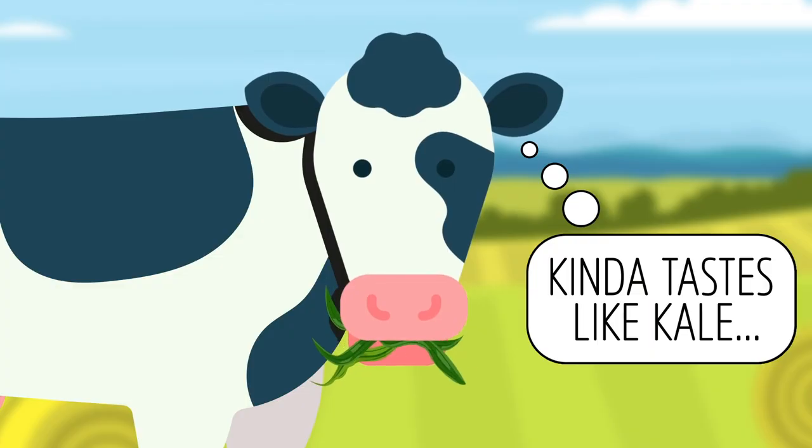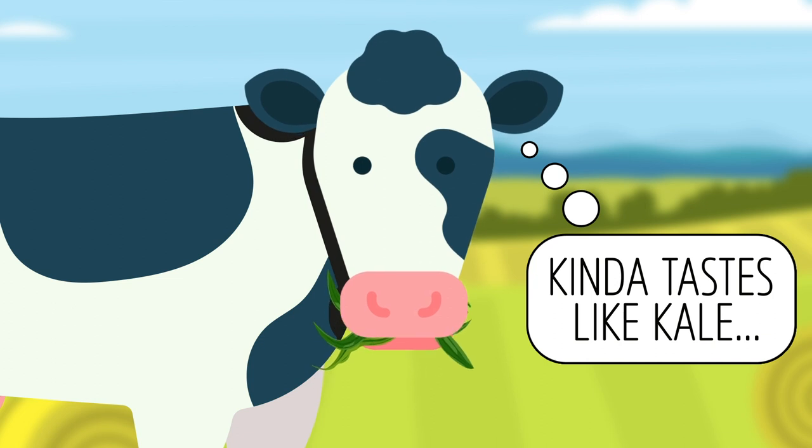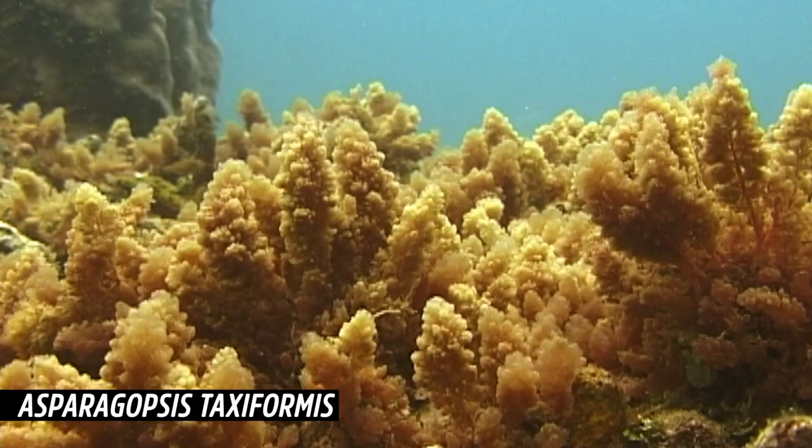Maybe by putting them on a diet, a seaweed diet. All the methane burped out by cows is produced in their gut, by bacteria. Turns out that one particular type of seaweed, Asparagopsis taxiformis, produces a compound called bromoform,